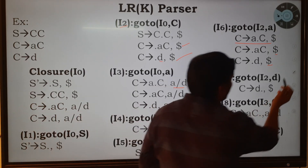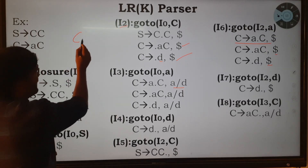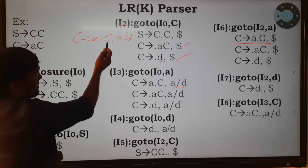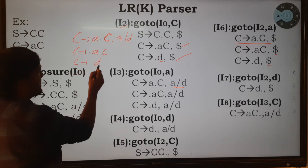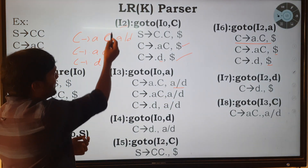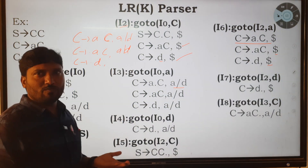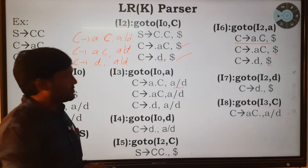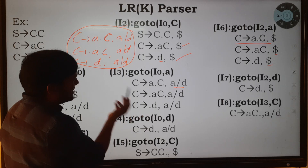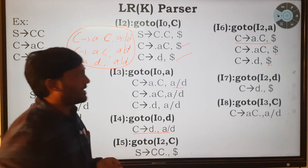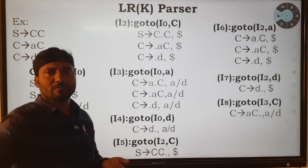Apply goto(i3, a): we get C → a•C with input strings a or d. After the dot there is capital C; add productions C → •aC and C → •d. Since β is epsilon, the lookahead symbols come from the previous production's input strings a or d. These productions repeat what is already in i3, so no need to apply goto for a and d again.